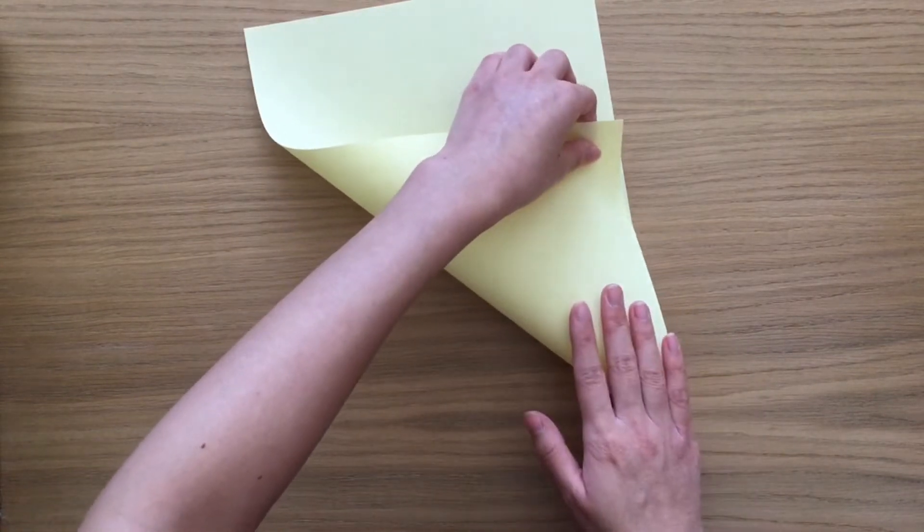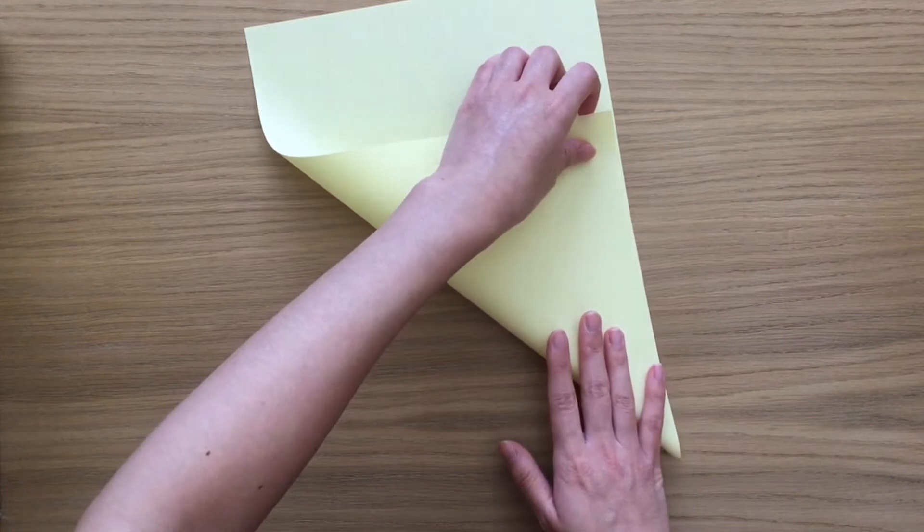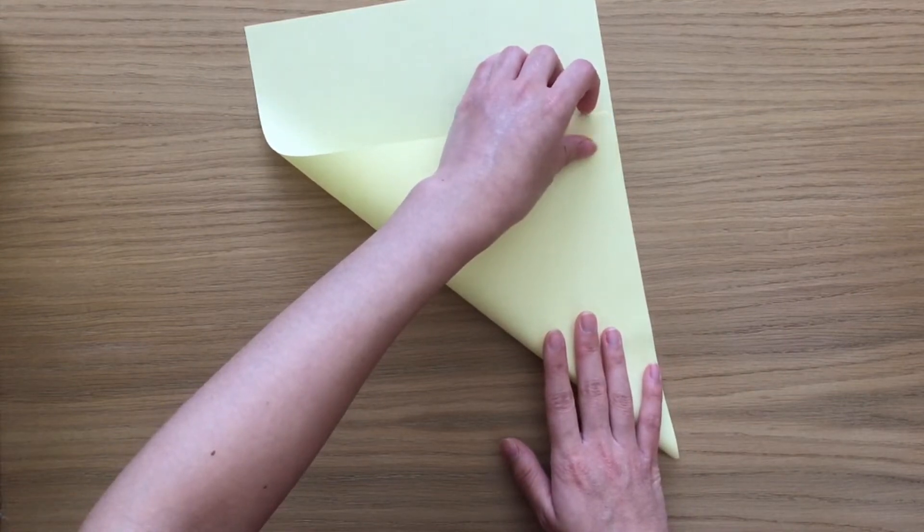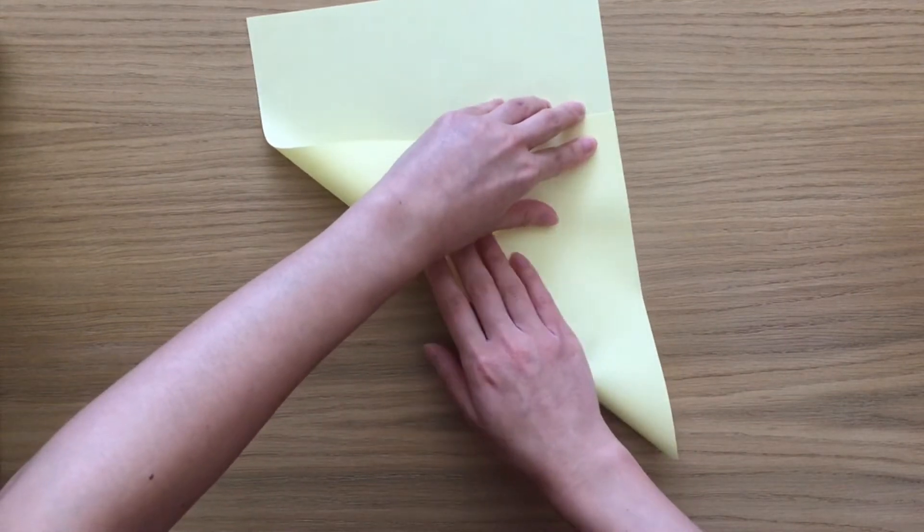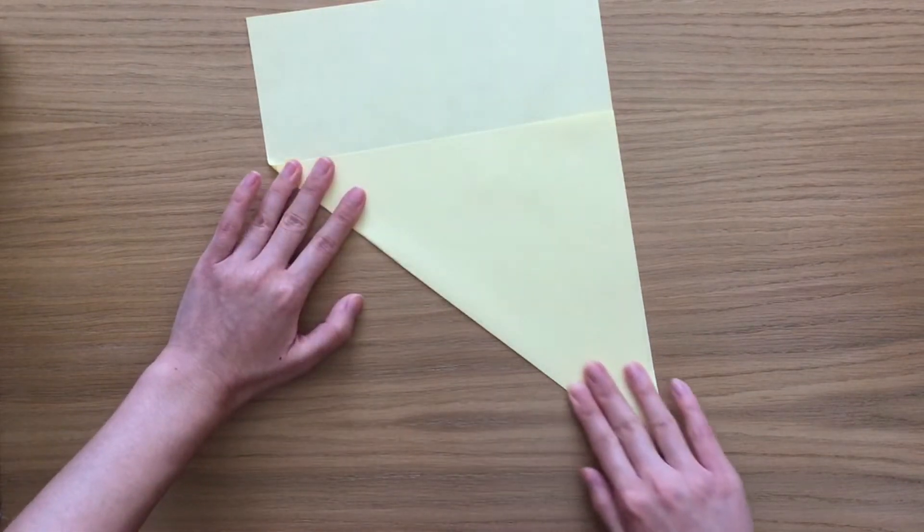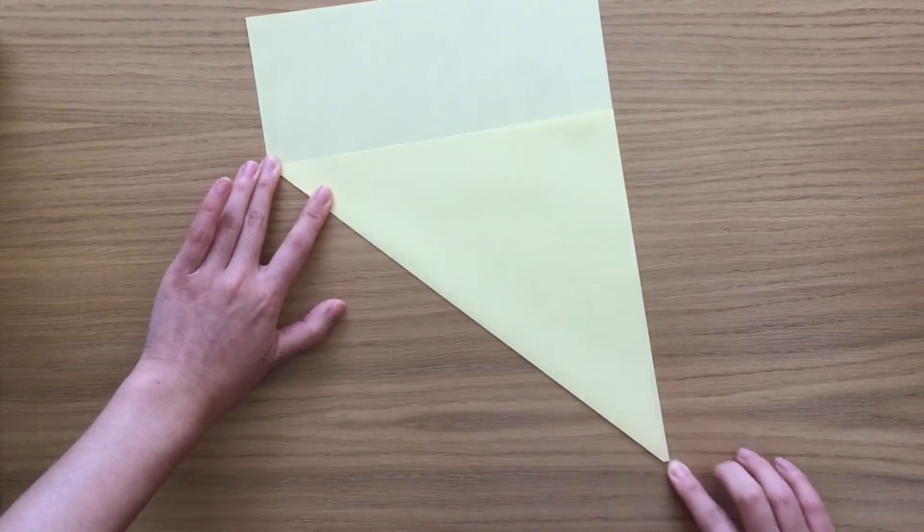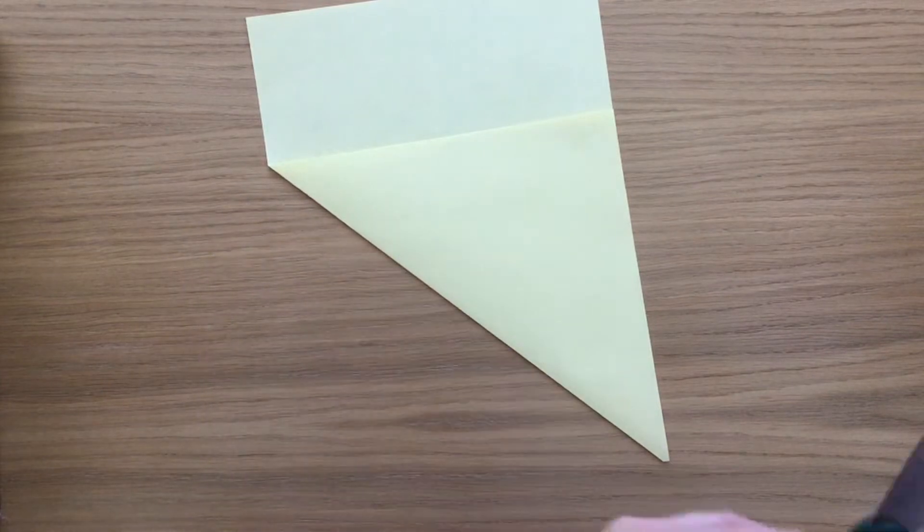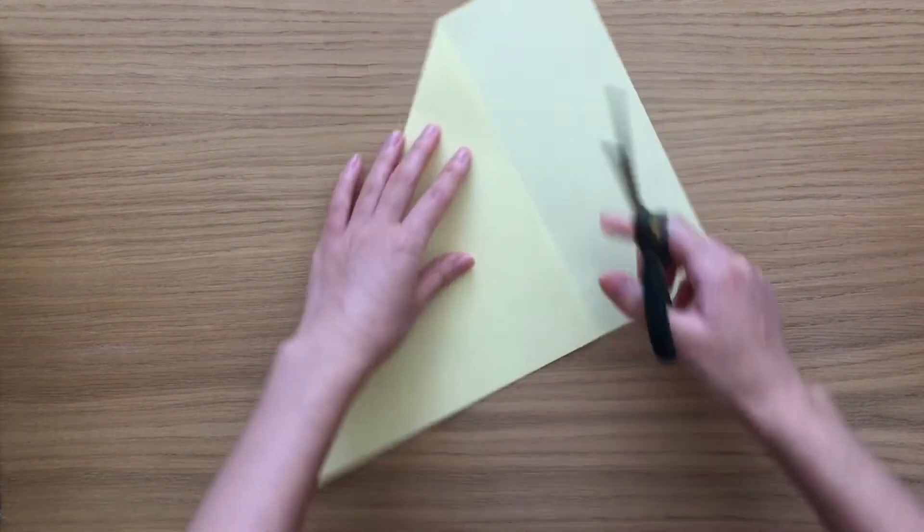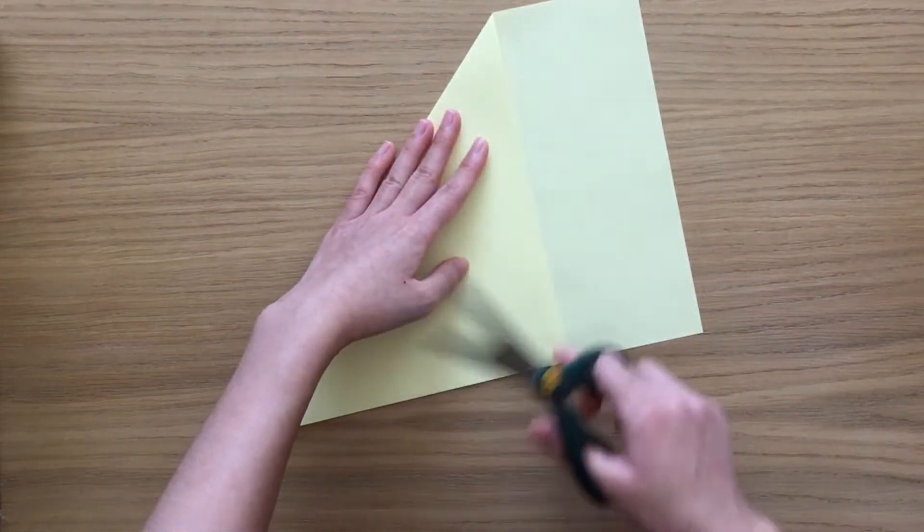With one of your pieces of paper, take one corner up to the opposite side so they line up like this all the way, and flatten it to make a fold. Then with your scissors, we're gonna cut along this line all the way across.